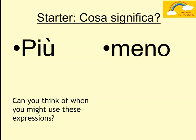Va bene, le risposte? In italiano, più significa more. Meno significa less. Oppure, più significa plus. Meno significa minus. So, si può dire più e meno meaning more and less, or plus and minus — there are two different translations depending on the context. With maths, if you were doing the sum one plus two, you would say uno più due. Similarly, if you're doing three minus one, tre meno uno. So that's one time you would use them.